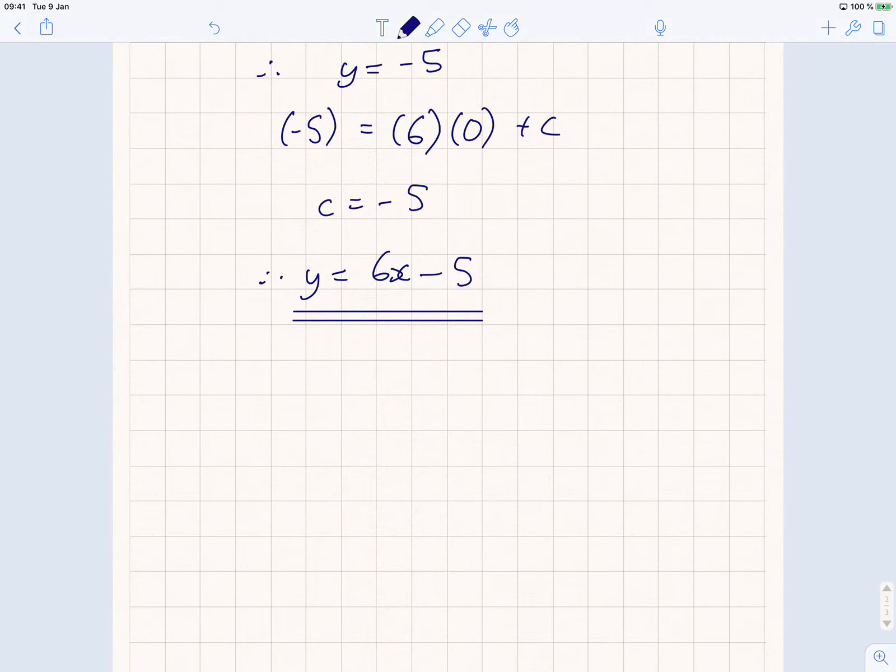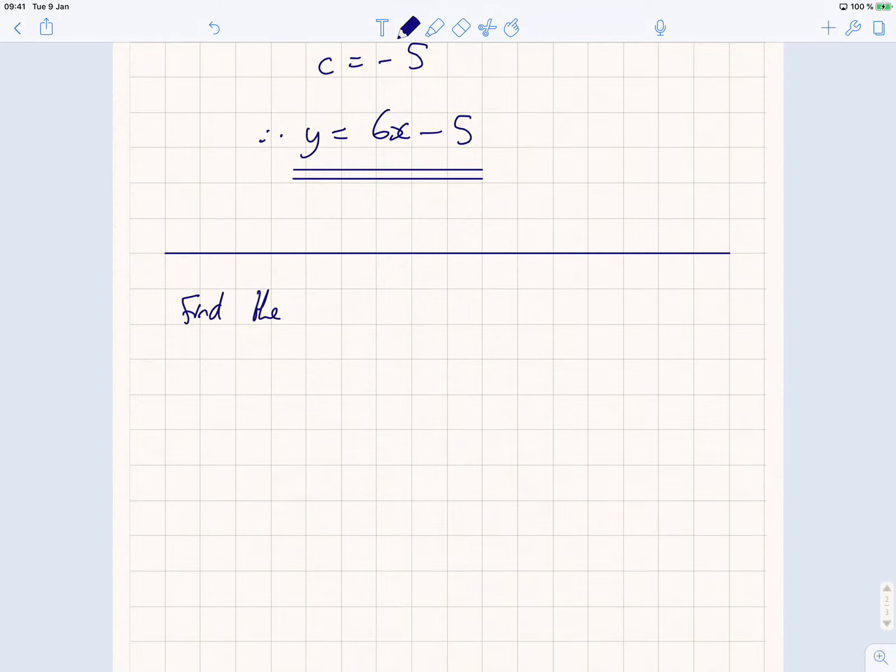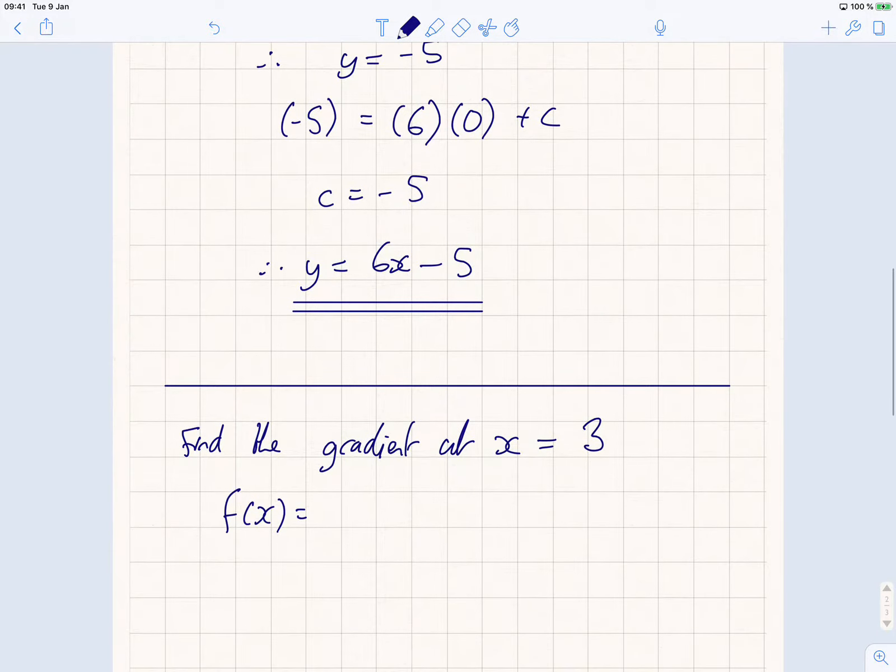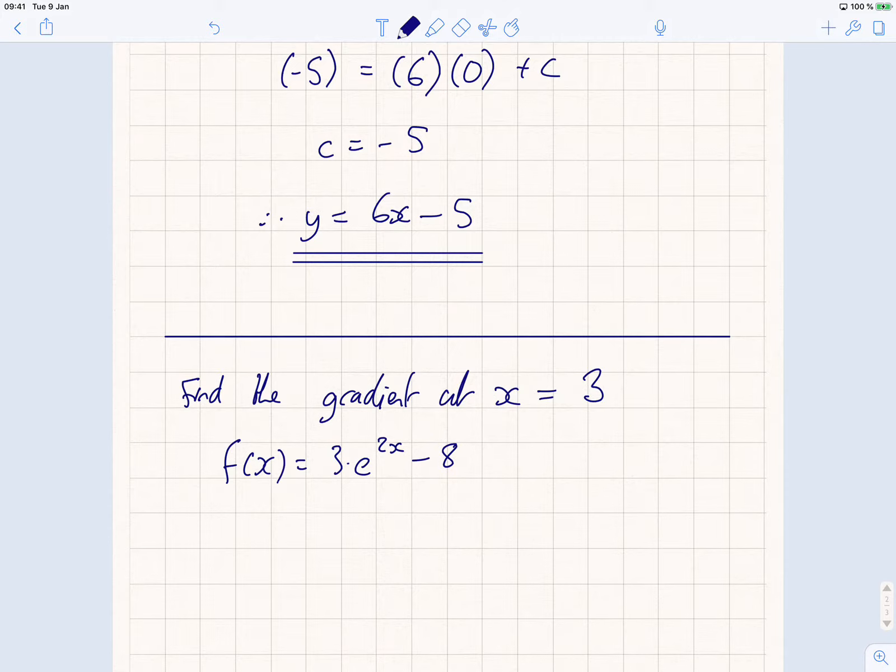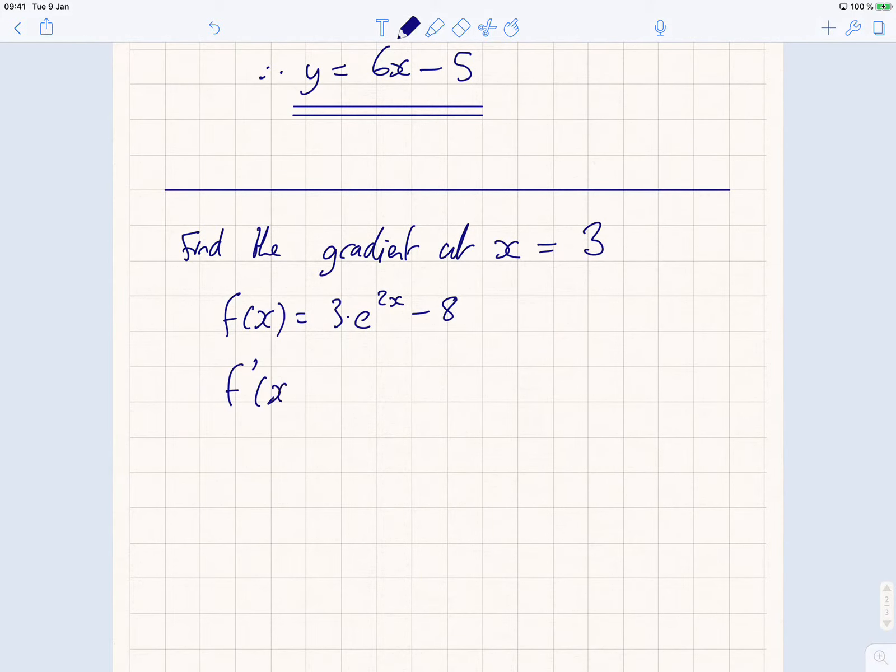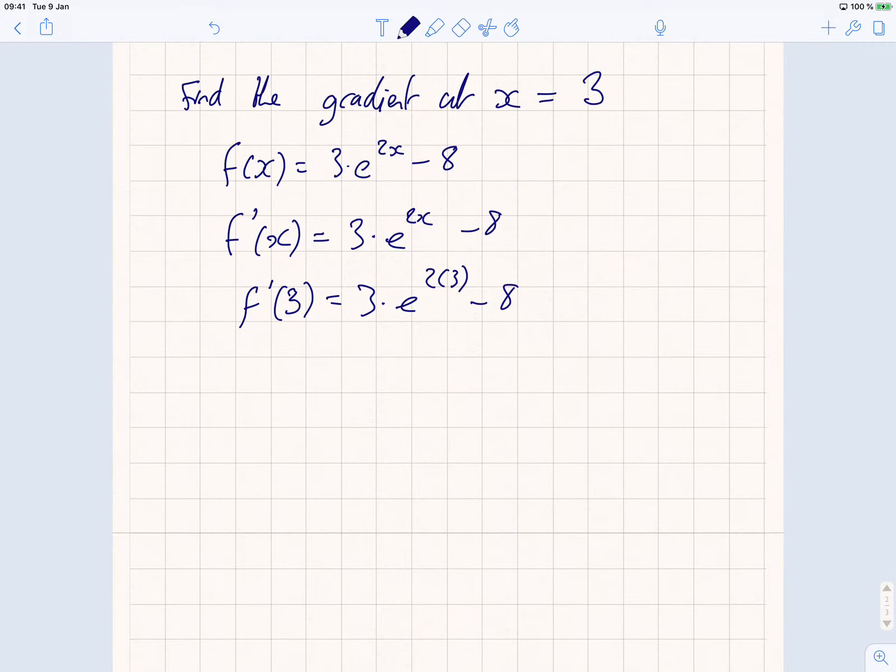Now, if I wanted to have the gradient at a particular point, so this is a different type of question. Let's say, find the gradient at x is equal to 3. You'd put in, we'll say f of x is still, what did we say it was? 3 times e to the 2x minus 8. So, I put in, I differentiate it, because it says gradient. I apologize, I'm doing this too quickly. Okay, let's put 3 in there. So, I get 3 times e to the 6 minus 8, and that's a natural value. That's a bit different.